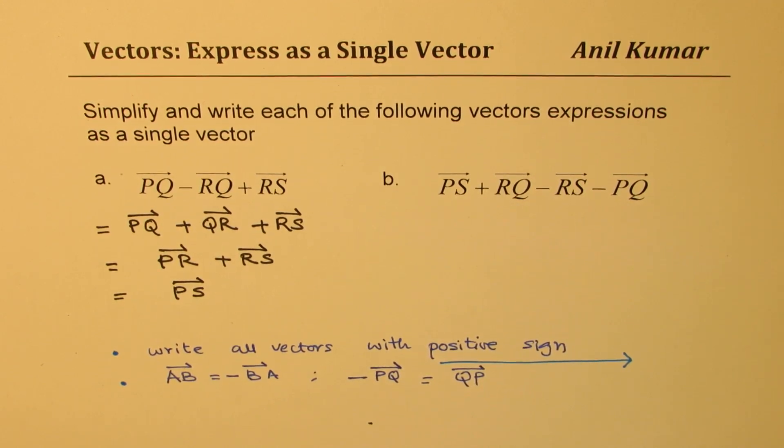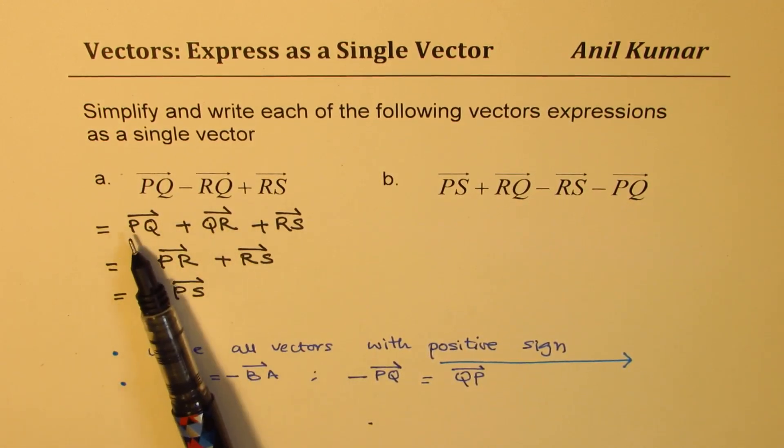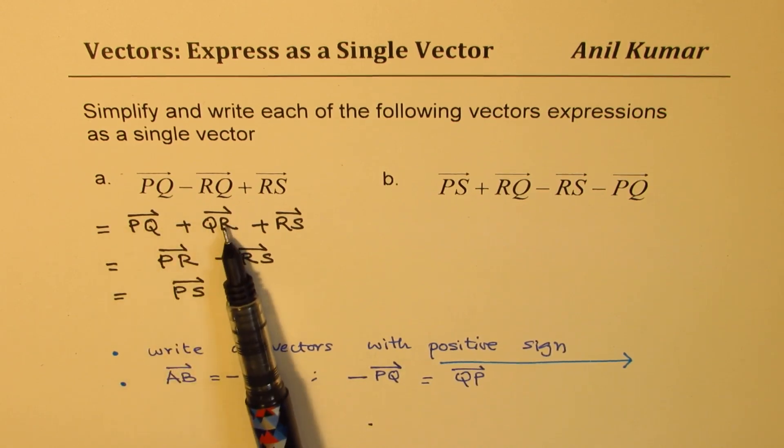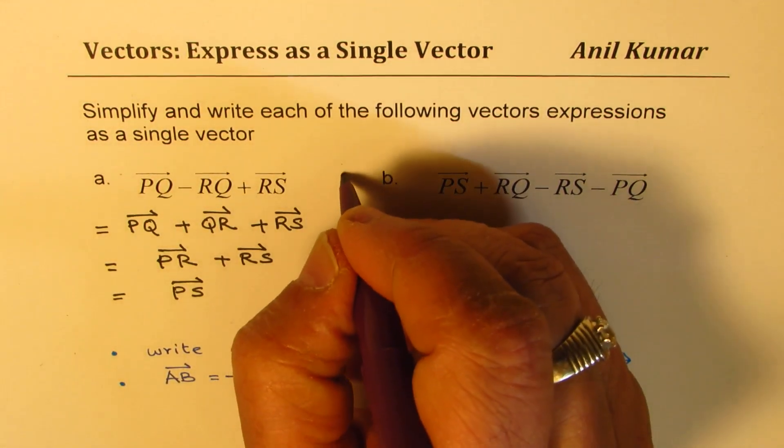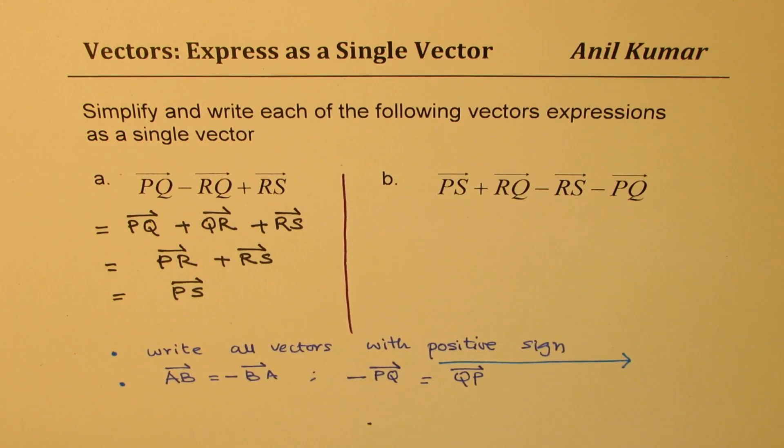Plus R to S. And now, P to R and R to S means the end point is at S starting with P. I could have written directly after this step, P to Q, Q to R, R to S means P to S. You get the idea. So since it is the very first example, we are going kind of in steps which are kind of important to understand.